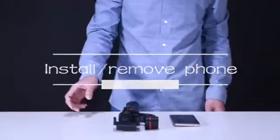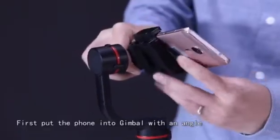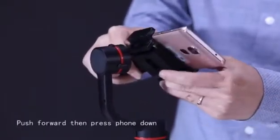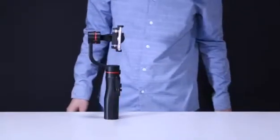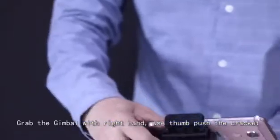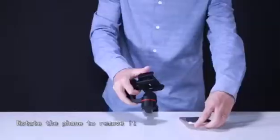Install and remove phone. First, put the phone into Jimbo with an angle. Push forward, then press the phone down. That's the way to install. To remove, grab the Jimbo with the right hand, use the thumb to push the bracket, and rotate the phone to remove it.